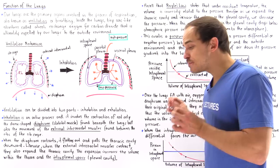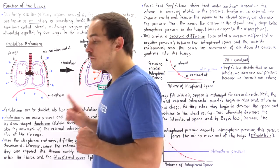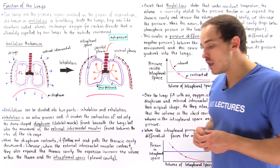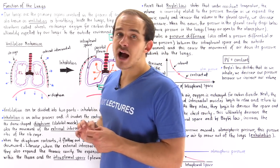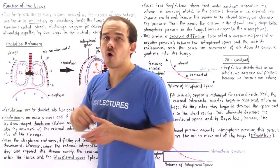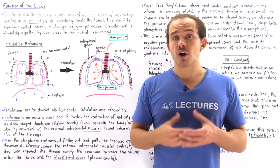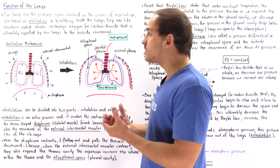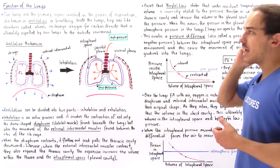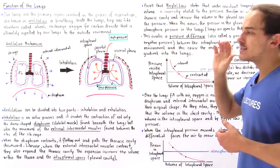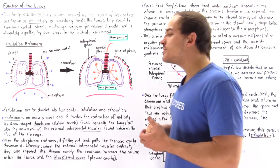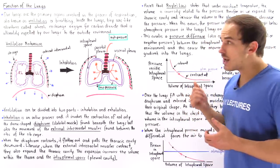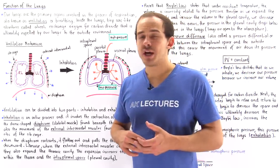Our lungs are specialized organs responsible for carrying out the process of breathing. Inside the lungs, we have many tiny microscopic specialized sac-like structures called alveoli, and these alveoli are specialized in exchanging oxygen for carbon dioxide. The lungs ultimately expel that carbon dioxide to the outside environment. The question we're going to explore in this lecture is how the process of breathing — how the process of ventilation — actually takes place inside our lungs.